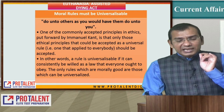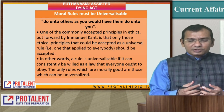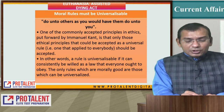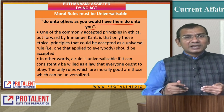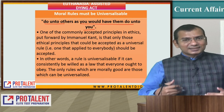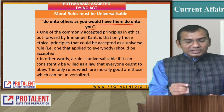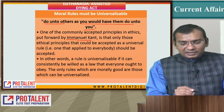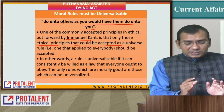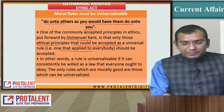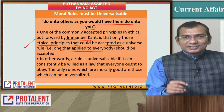When we say moral rules must be universalizable: a very good statement says 'do unto others as you would have them do unto you.' This idea was put forward by Immanuel Kant, a very famous philosopher. He said that ethical principles that could be acceptable as a universal rule — one applied to everybody — should be accepted. So here we are talking about euthanasia being universalizable.